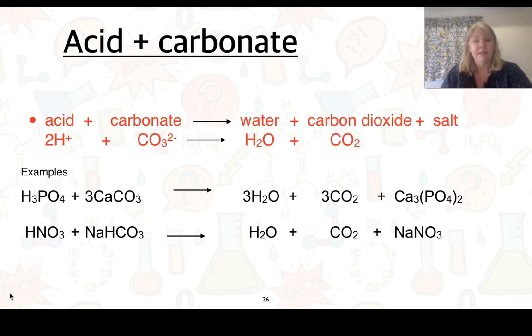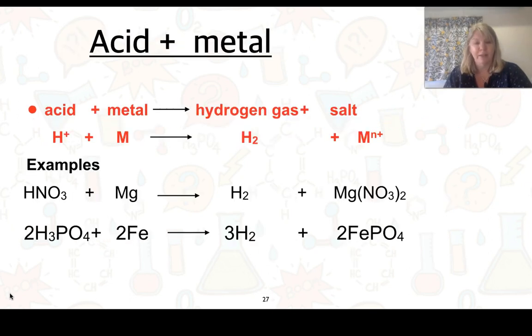Our next example is an acid plus a carbonate. That one goes to water, carbon dioxide and a salt. So here we've got an example here. Here's our acid. Here's our carbonate. So water, carbon dioxide and a salt. Second example. Acid plus this one here is a hydrogen carbonate or a bicarbonate, acid, carbon dioxide and a salt. Again check that they're balanced.